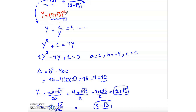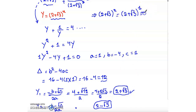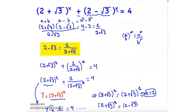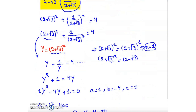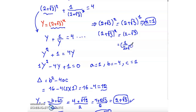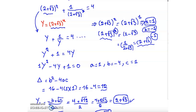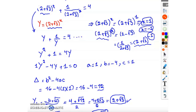We know that y = (2 + √3)^x. So for y₁: (2 + √3)^x = 2 + √3, which implies x = 1. For y₂: (2 + √3)^x = 2 − √3. But 2 − √3 = 1/(2 + √3) = (2 + √3)^(−1), so by comparing, x = −1. The solution of this equation is x = 1 and x = −1. If you liked the video, please hit the like and subscribe button. Goodbye!